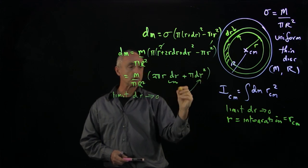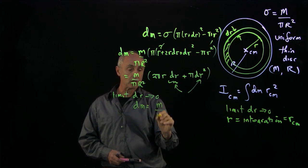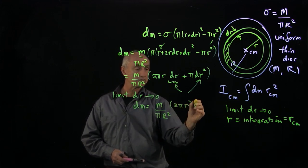And so when I take this limit as dr goes to 0, this term is much smaller than that term. And so I can say my mass element is m over πr² times 2πr dr.